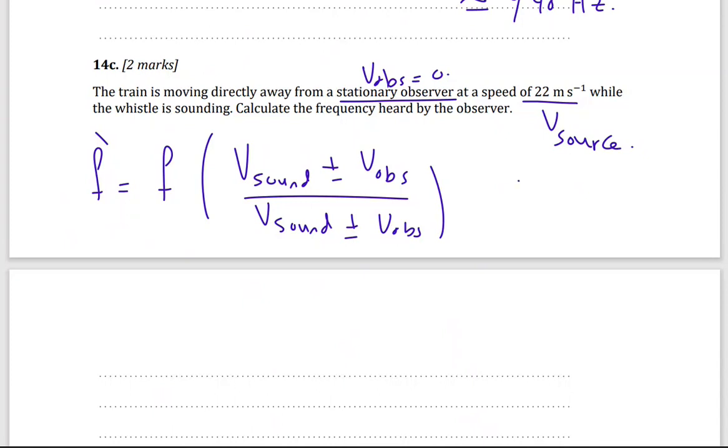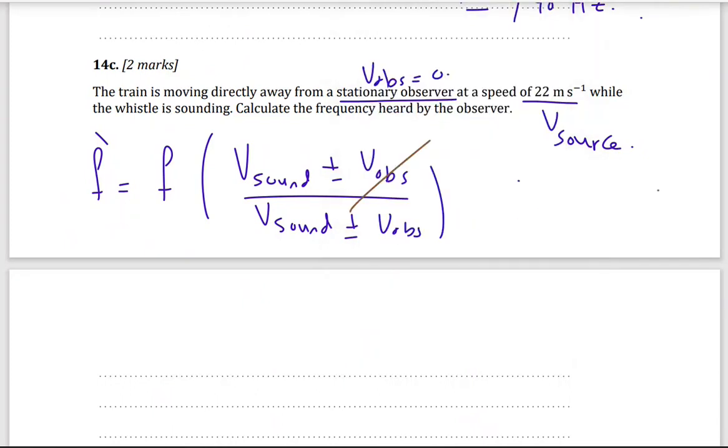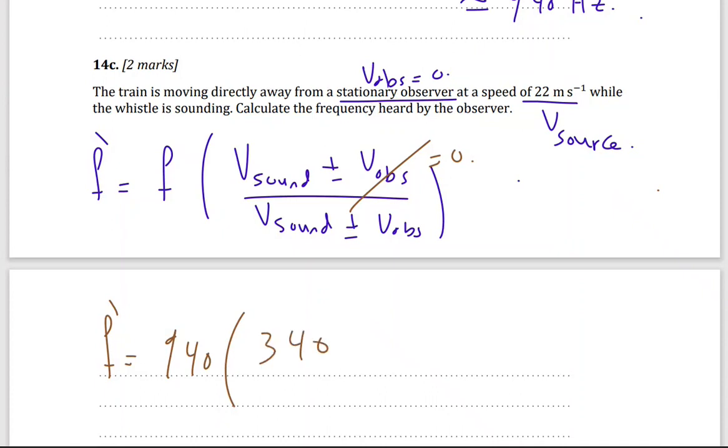So just substitute now. Here. This is zero. So F prime. Frequency observed by the observer, 940. 340 divided by 340. Now positive or negative. The train is moving away.